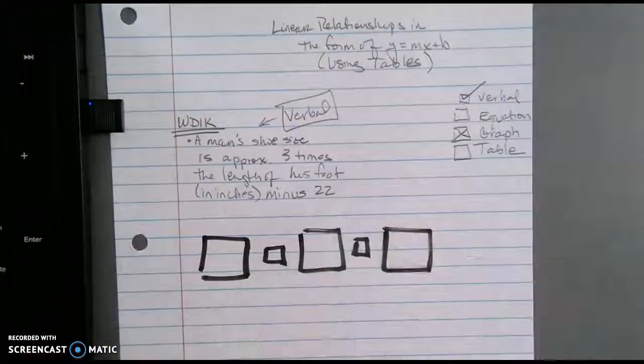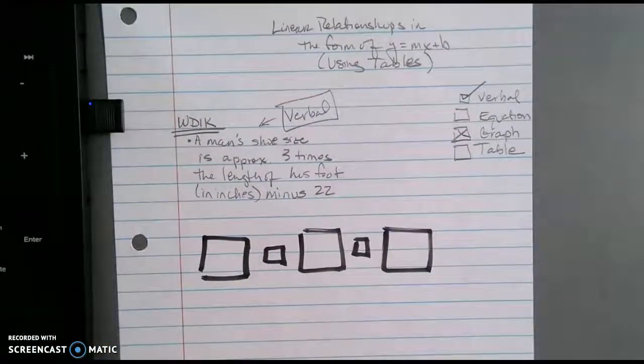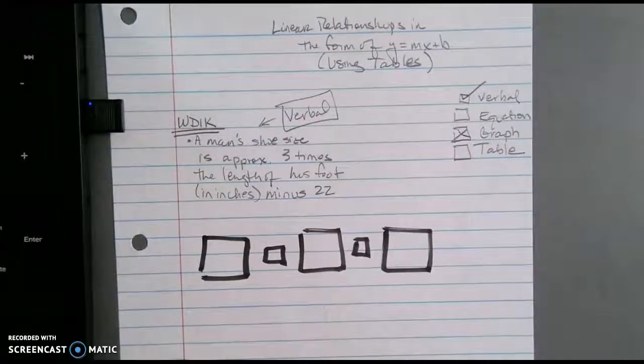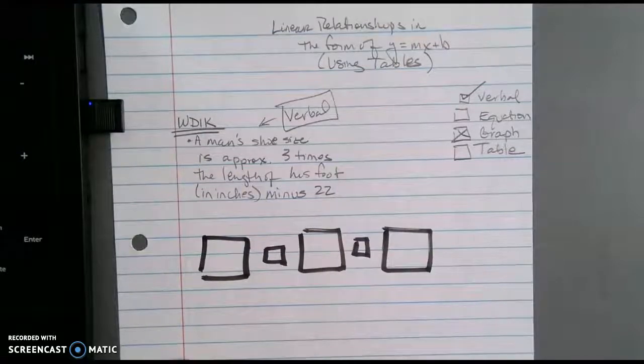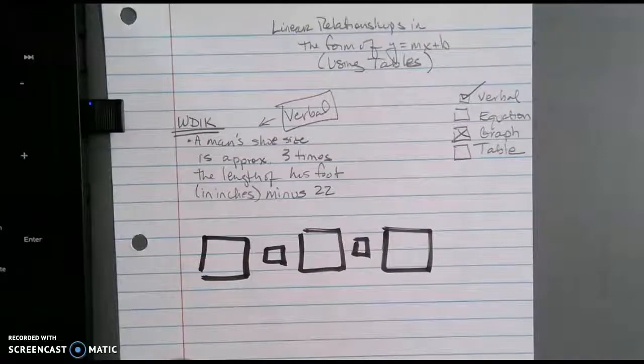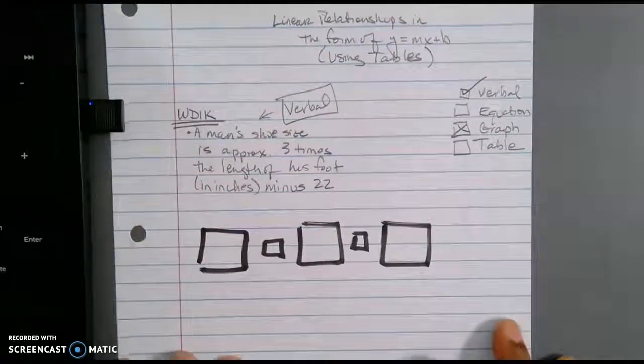Where some value of y is going to be equal to your rate of change, which we're going to talk about, times x plus b, which is some constant. Now your child should have this information already written down in their notes in the unpacking part of our unit at the very beginning.